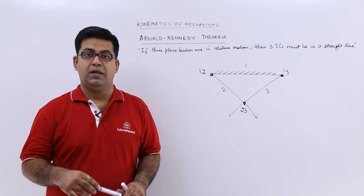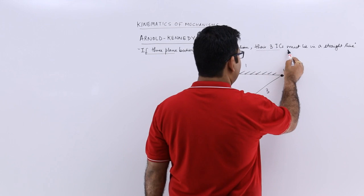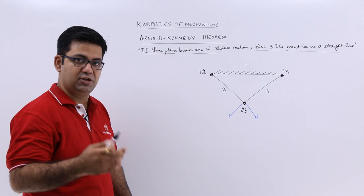Let's talk about the Arnold Kennedy theorem. As per this theorem, if three plane bodies are in relative motion, then their three ICs must lie in a straight line. This is the definition of this theorem.